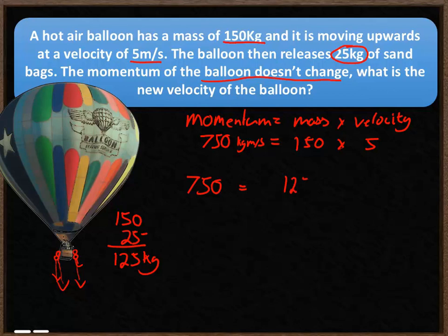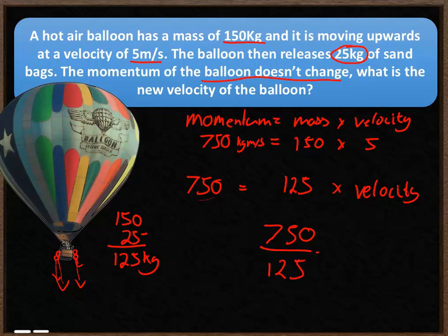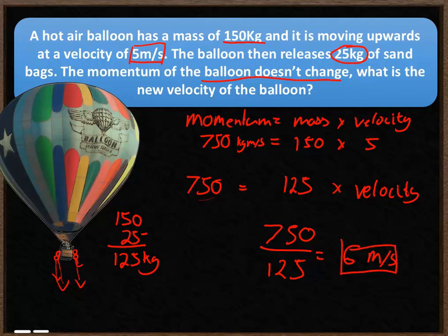Substituting into the momentum formula: 750 equals 125 times the new velocity. So the new velocity equals 750 divided by 125, which works out to 6 meters per second. The original velocity was 5 meters per second, and after releasing 25 kilograms of extra mass, it has increased to 6 meters per second.